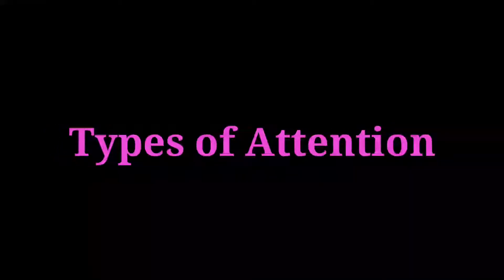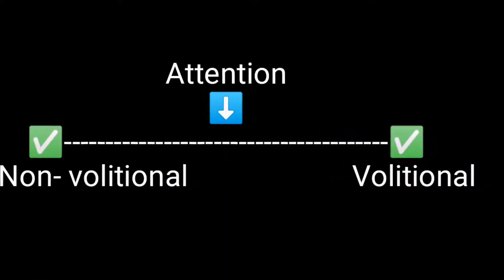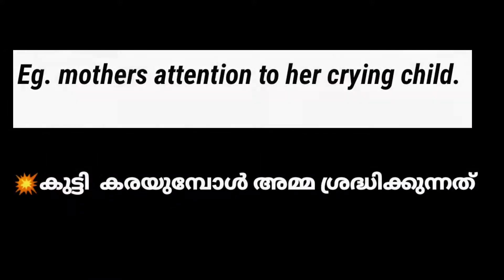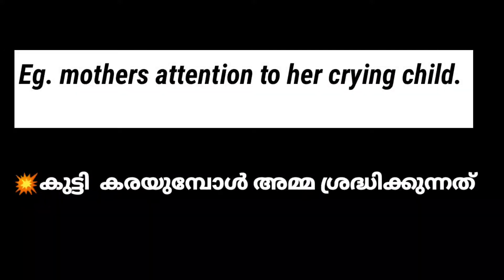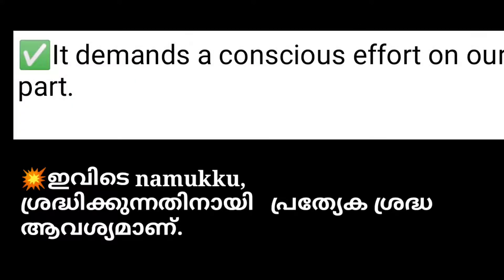Various authors have classified attention in a variety of ways. The classification given by Ross, which seems to be the more acceptable classification, divides attention into non-volitional and volitional attention. In non-volitional or involuntary attention, we attend to an object or idea without any conscious effort on our part. Examples include a mother's attention to her crying child, attention towards members of the opposite sex, attention to a sudden loud noise, and attention to bright colors.